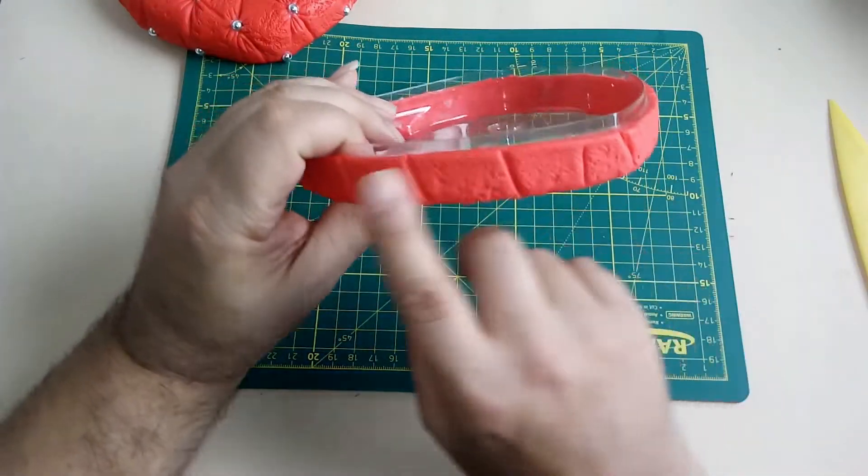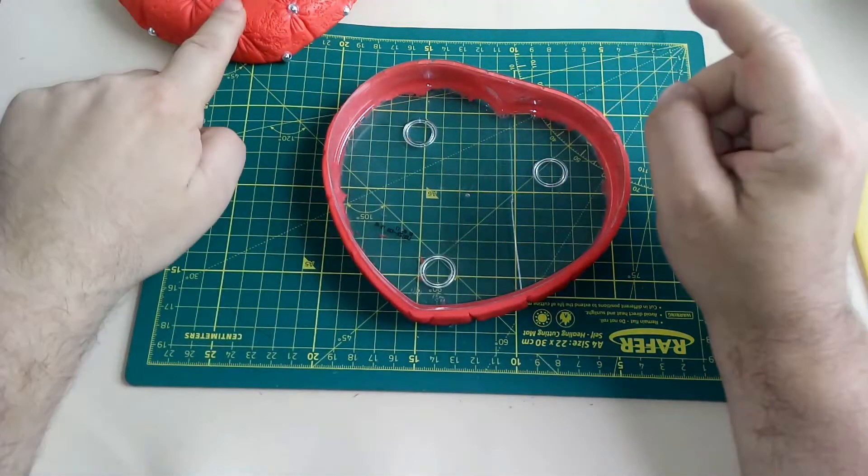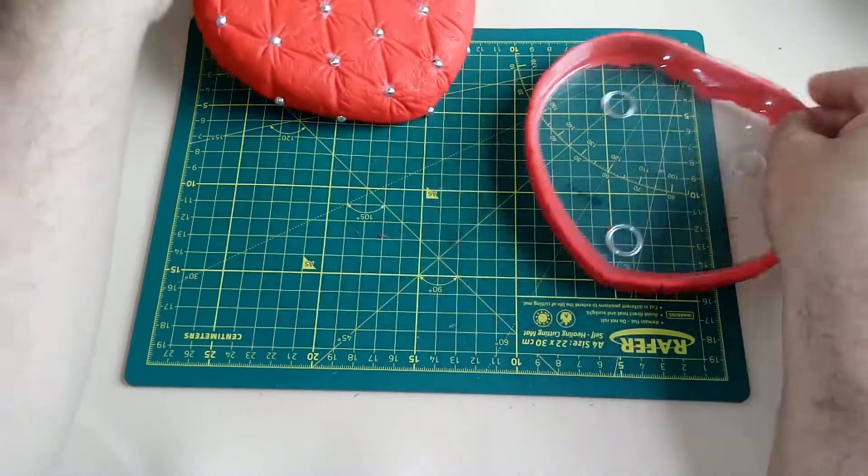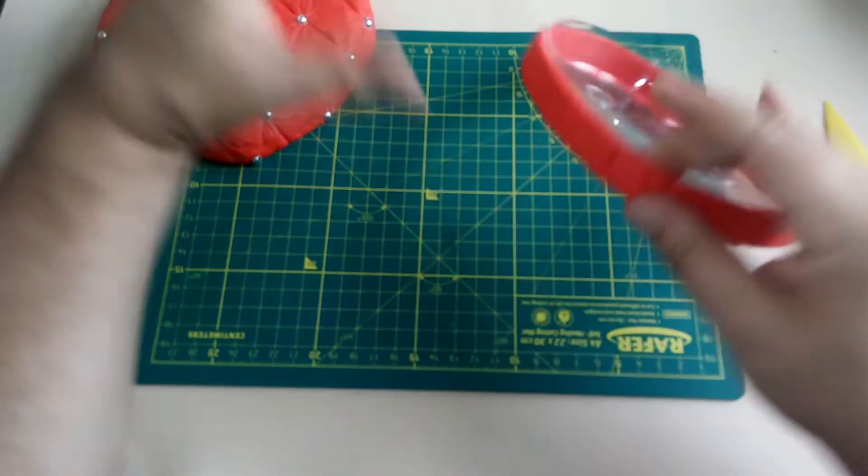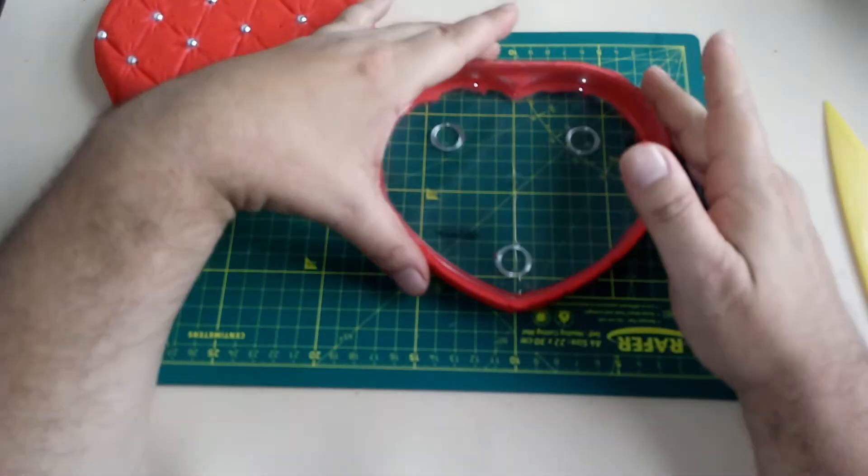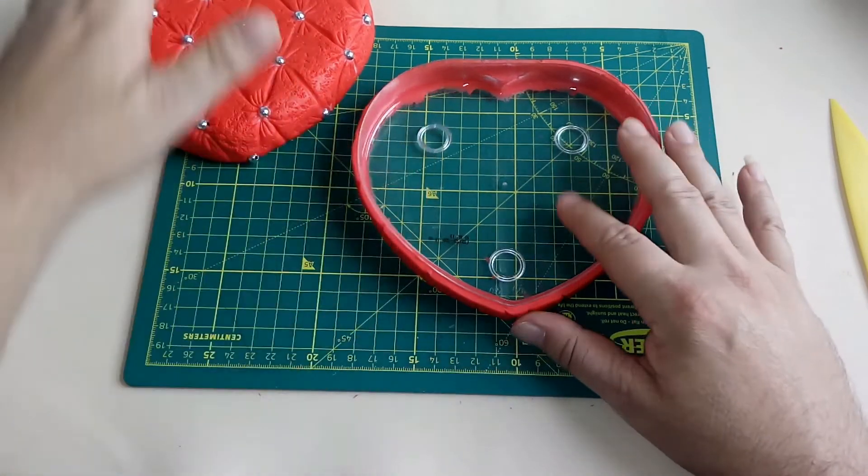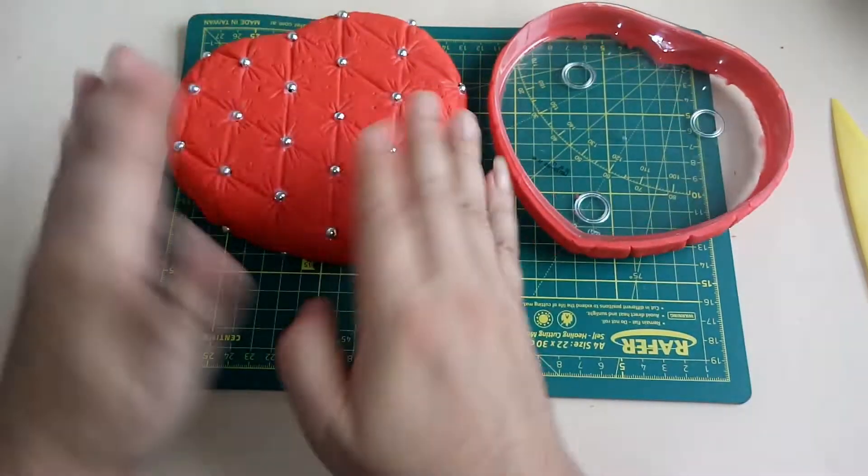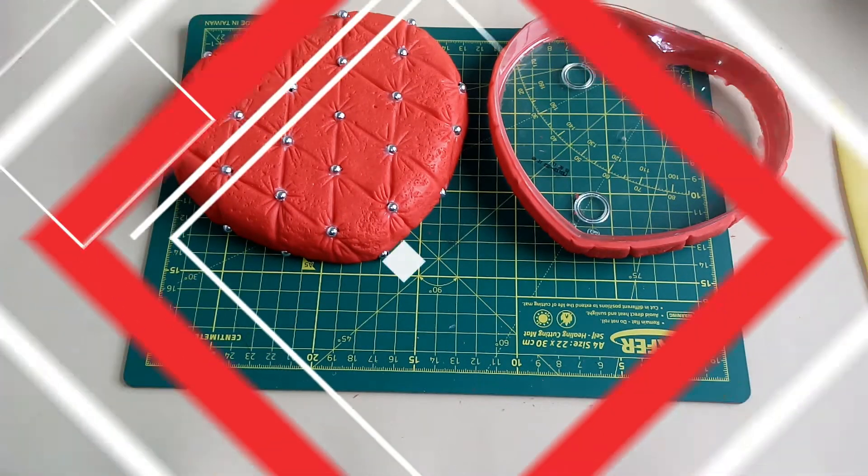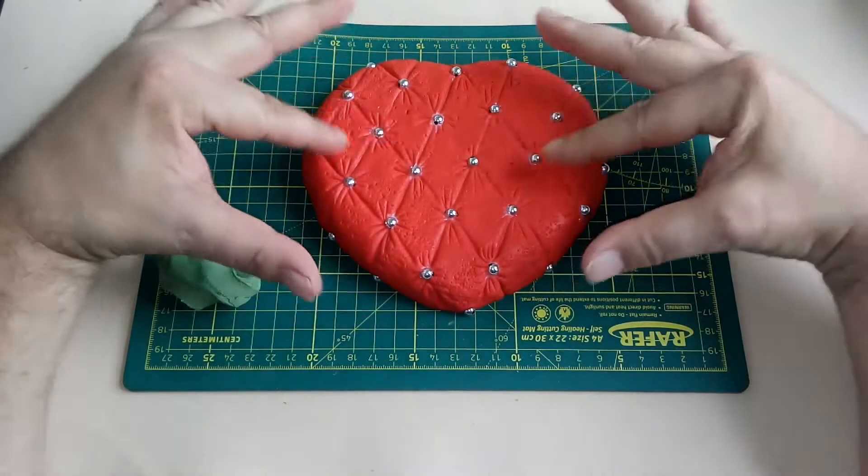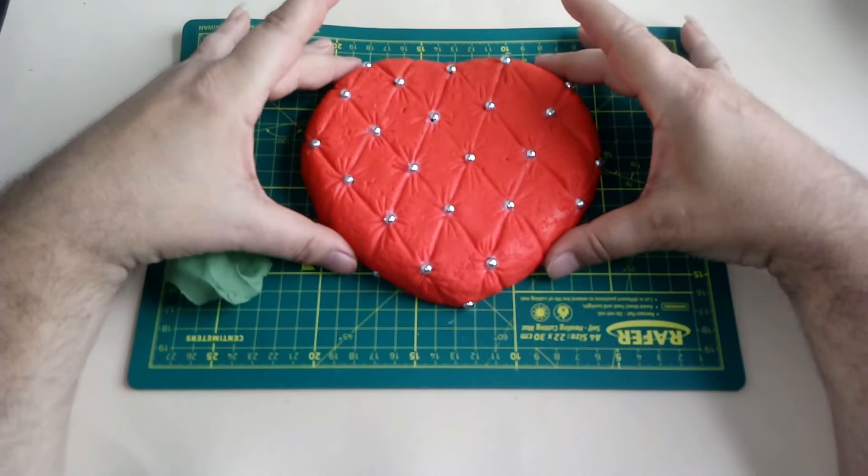En este sector lo más probable es que no tenga ningún cruce que me pida colocar piedritas. No hay ningún problema. Vamos a dejar secar un poquito, así podemos terminar de decorar nuestra tapa. Para terminar de decorar nuestra tapa, vamos a hacer un ramo de rosas aquí arriba.